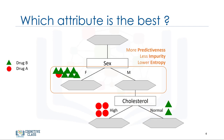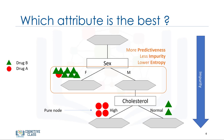The choice of attribute to split data is very important, and it is all about purity of the leaves after the split. A node in the tree is considered pure if, in 100% of the cases, the nodes fall into a specific category of the target field. The method uses recursive partitioning to split the training records into segments by minimizing the impurity at each step. Impurity of nodes is calculated by entropy of data in the node. So, what is entropy?